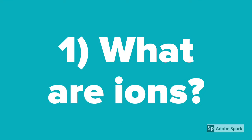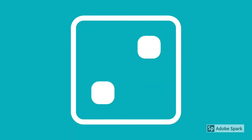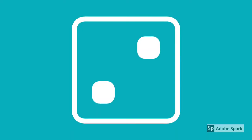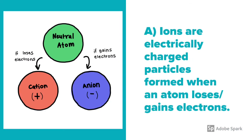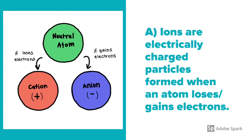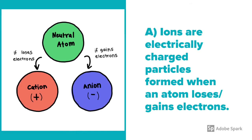Question number 1: What are ions? Ions are electrically charged particles formed when an atom loses or gains electrons.